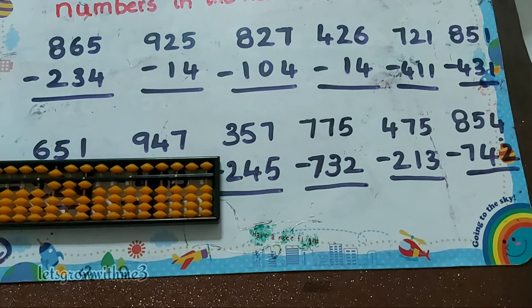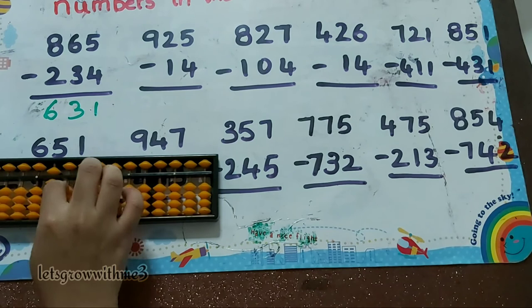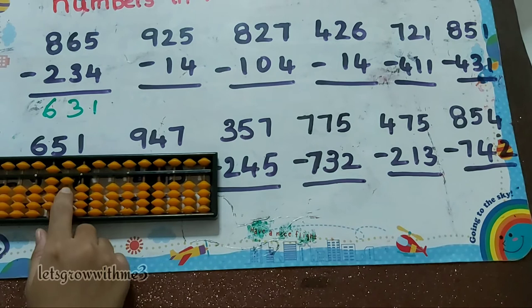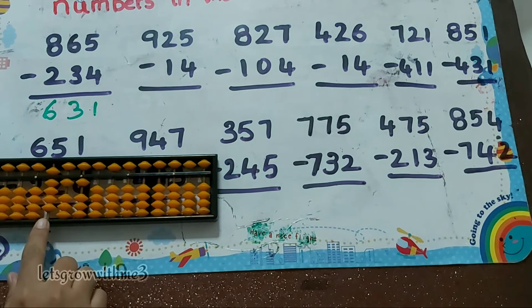Next one, 925 minus 14: so minus 1. How to do minus 4? Minus 5 plus 1. So the answer is 911.